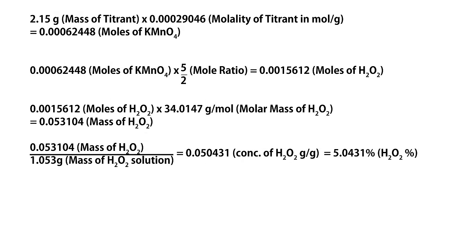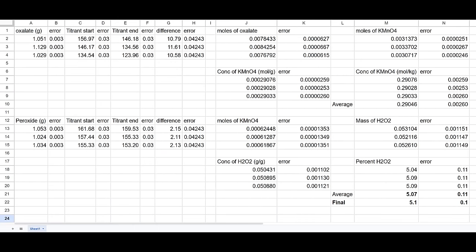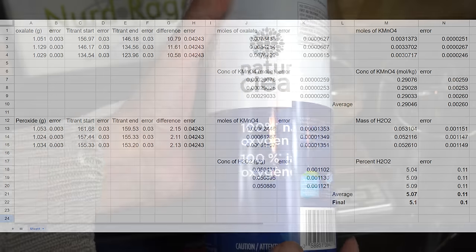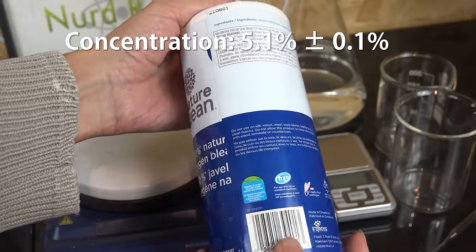It took about 2.1 grams of titrant for every trial, so if we multiply that by the molality, we get about 0.0062 moles of potassium permanganate. Now potassium permanganate reacts with hydrogen peroxide in a 5 to 2 mole ratio, so this corresponds to 0.00156 moles of hydrogen peroxide. We multiply that by the molar mass of hydrogen peroxide to get about 0.053 actual grams of hydrogen peroxide per one gram we added. We divide the actual grams by the amount of hydrogen peroxide added per trial and that gives us 5.04 percent. We perform the same calculation for every trial, and none of them look weird, so we average them out and get 5.1 percent plus or minus 0.1 percent. And there we have it, after all that work we finally have our actual concentration of this particular bottle of hydrogen peroxide.